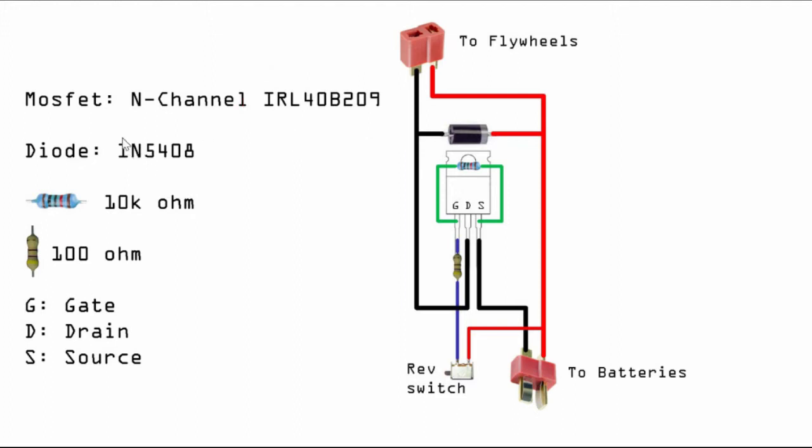I make use of this diode for the flyback, and then of course a 10k ohm and a 100 ohm resistor. For the MOSFET, most of them will come with gate, drain, and source.